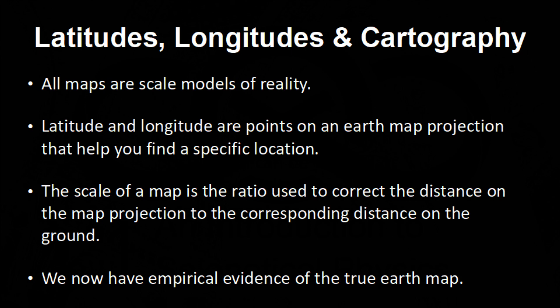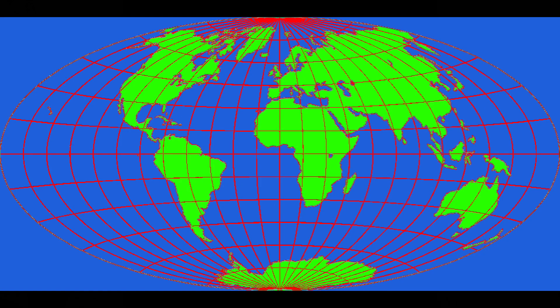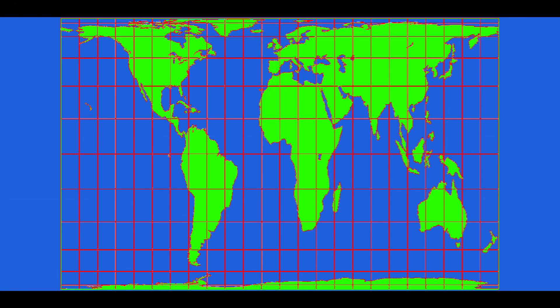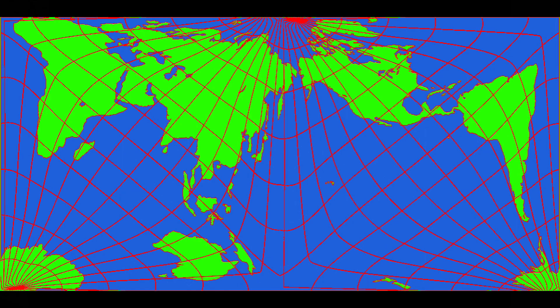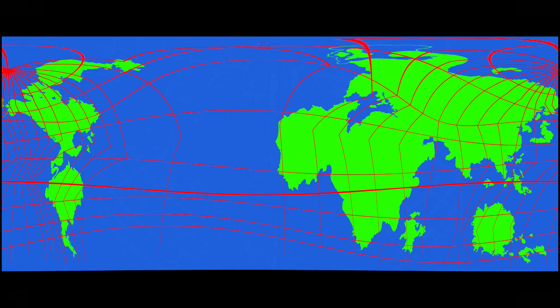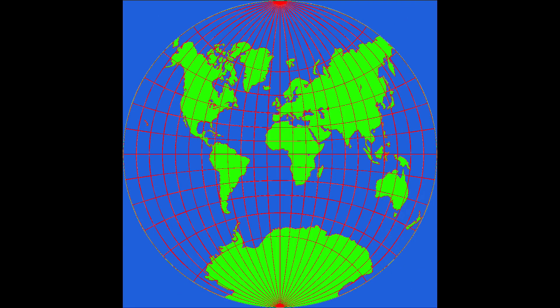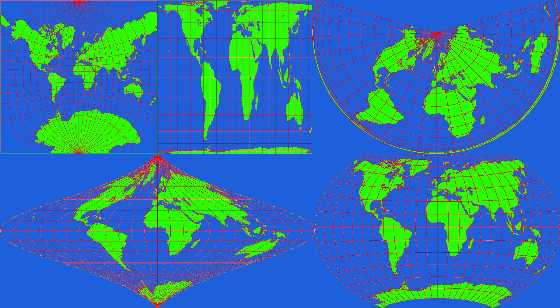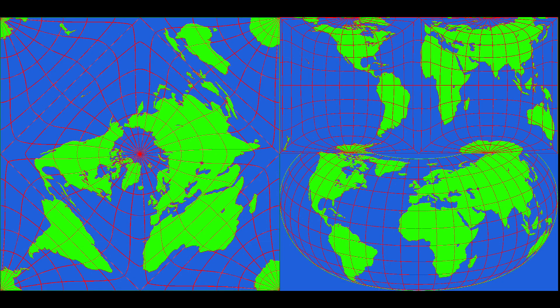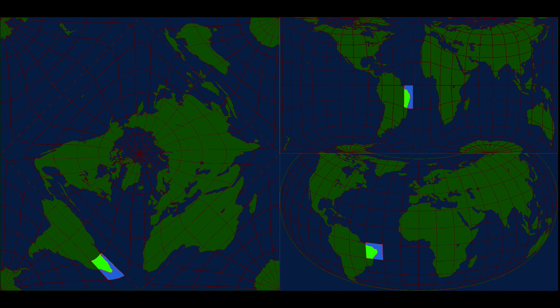We now have empirical evidence of the true earth map. The following is a series of earth map projections. As a general rule, the horizontal red lines are latitude and the vertical red lines are longitude. As these lines intersect, they create bounded areas. The bounded areas of each projection cover the same area of earth as the corresponding bounded areas on the other projections.